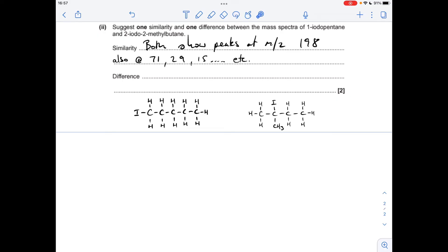Now there are lots of other ways that can be similar as well. They can both lose iodine, so they would show fragments at 71 due to the remainder of the molecule. They can show fragments of 29 because they can both lose an ethyl group. They can both lose methyl fragments, so 15 as well. So lots of other ways.